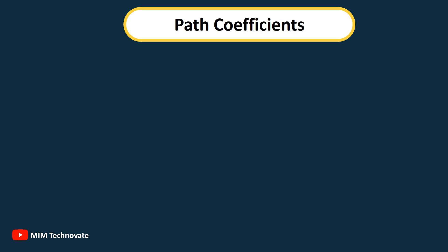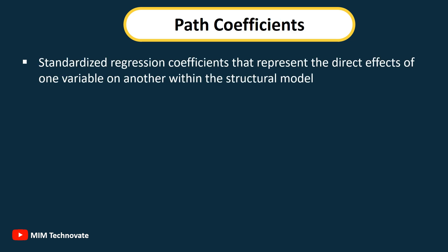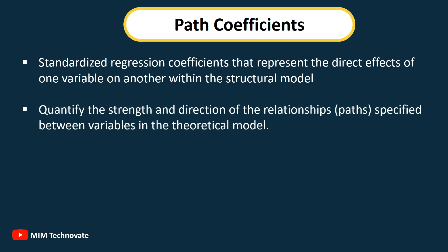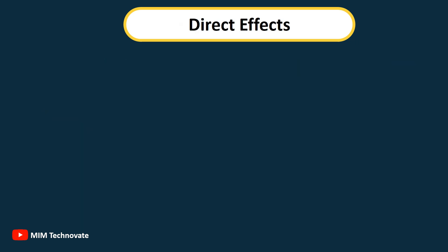Path Coefficients: The standardized regression coefficients that represent the direct effects of one variable on another within the structural model. They quantify the strength and direction of the relationship paths specified between variables in the theoretical model.